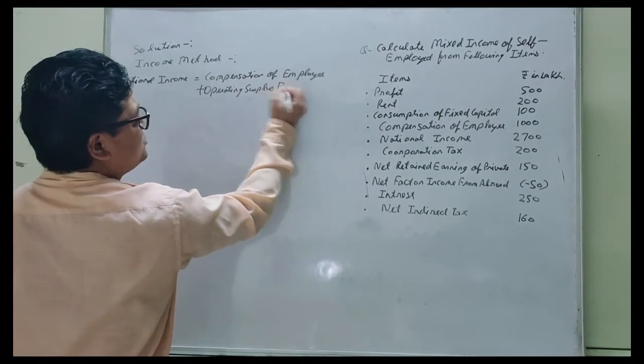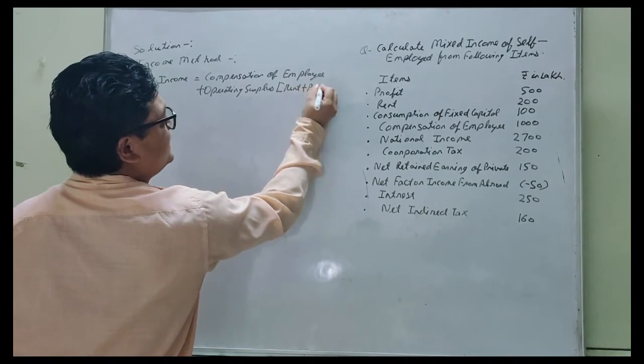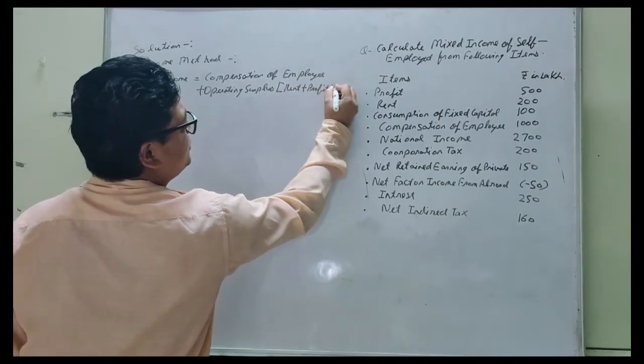In operating surplus, you know, rent, profit, and interest income. In the previous class I have told you.